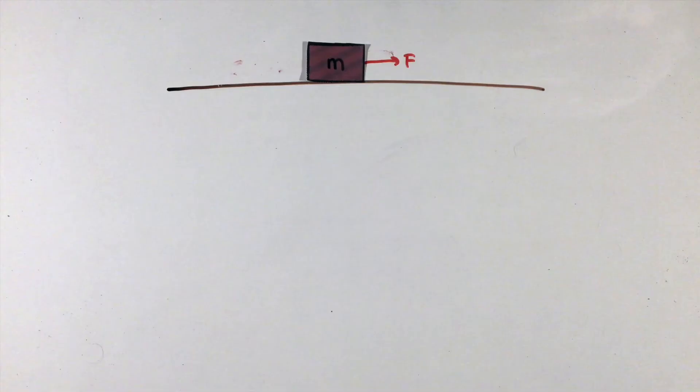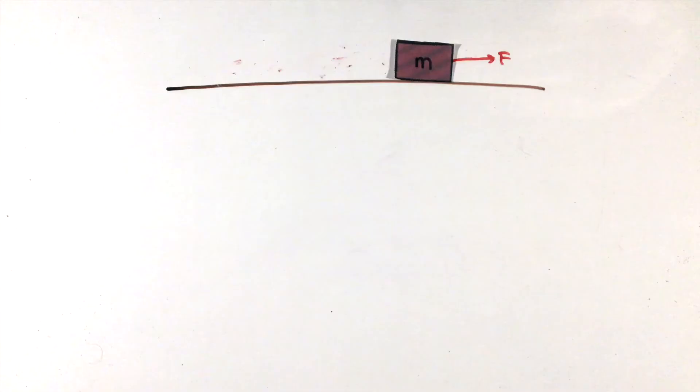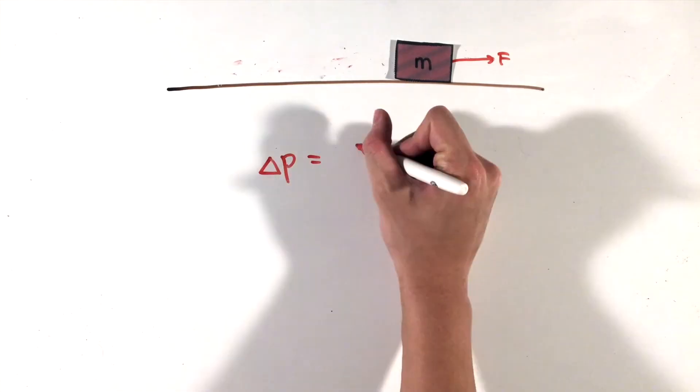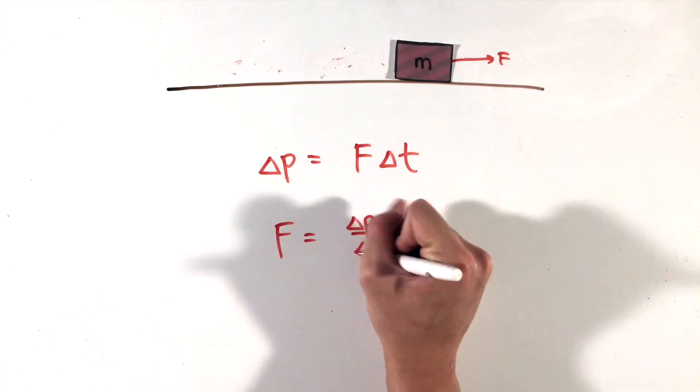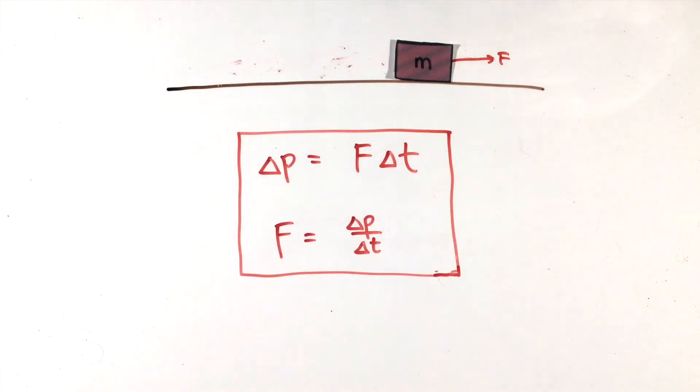The equation for impulse, or an object's change in momentum, is equal to the product of force and length of time the force was applied for. This equation also shows us that the magnitude of an applied force can be defined as the rate of change of the object's momentum.